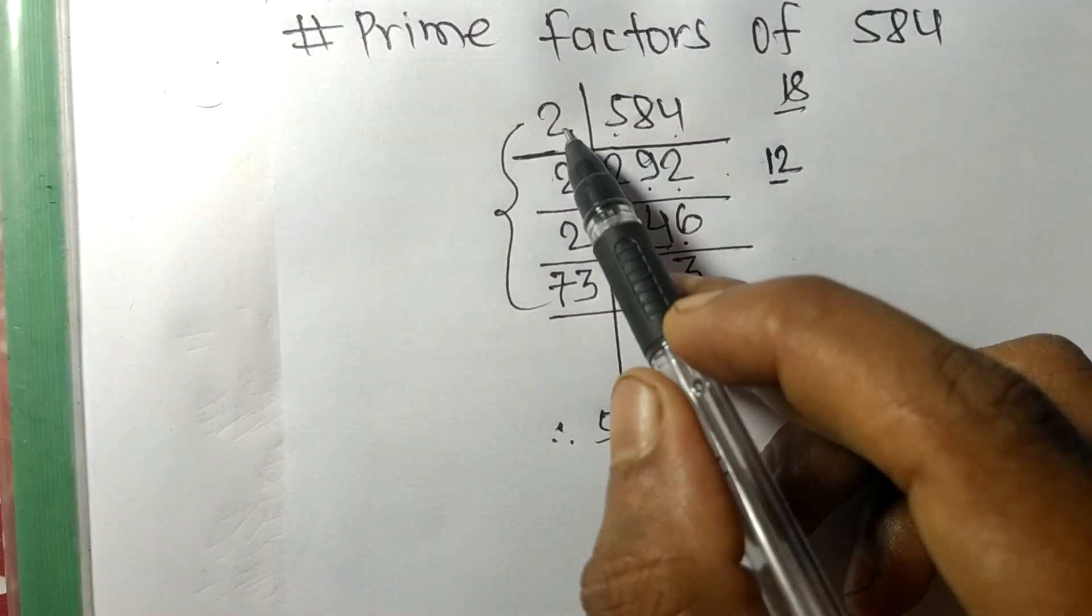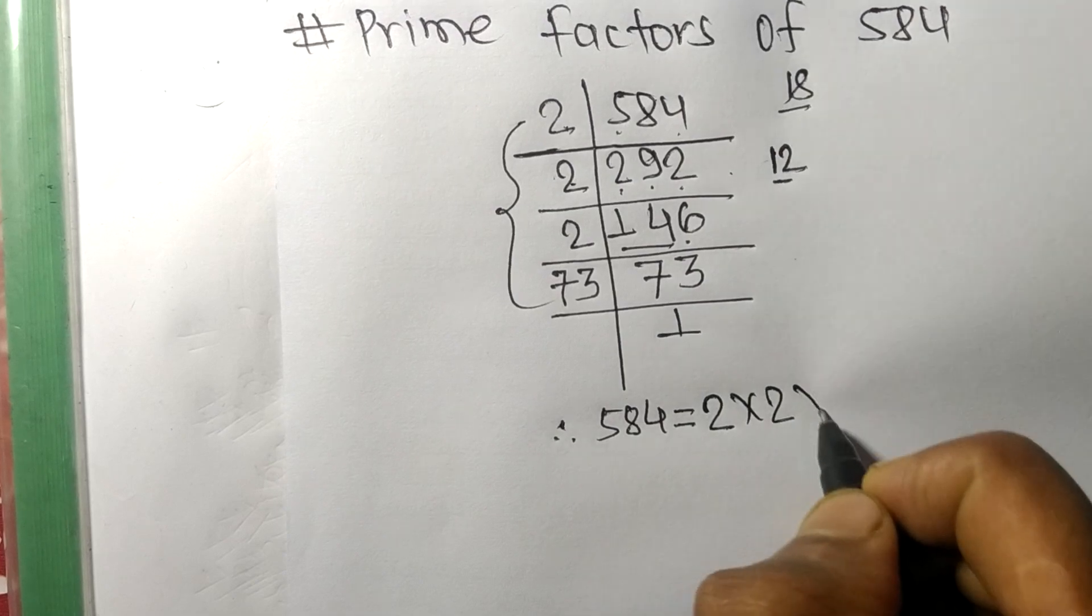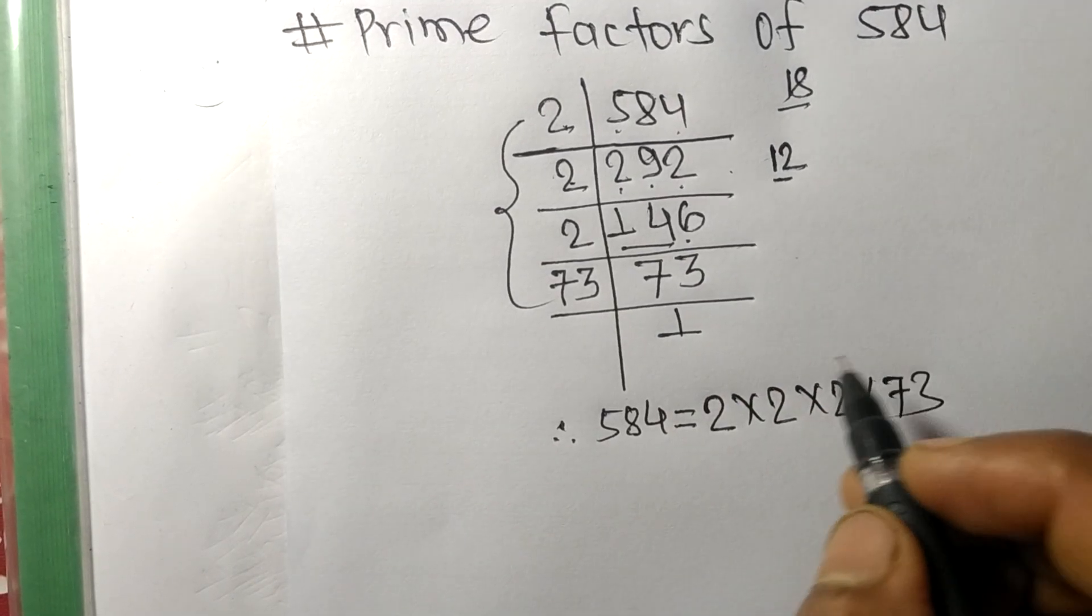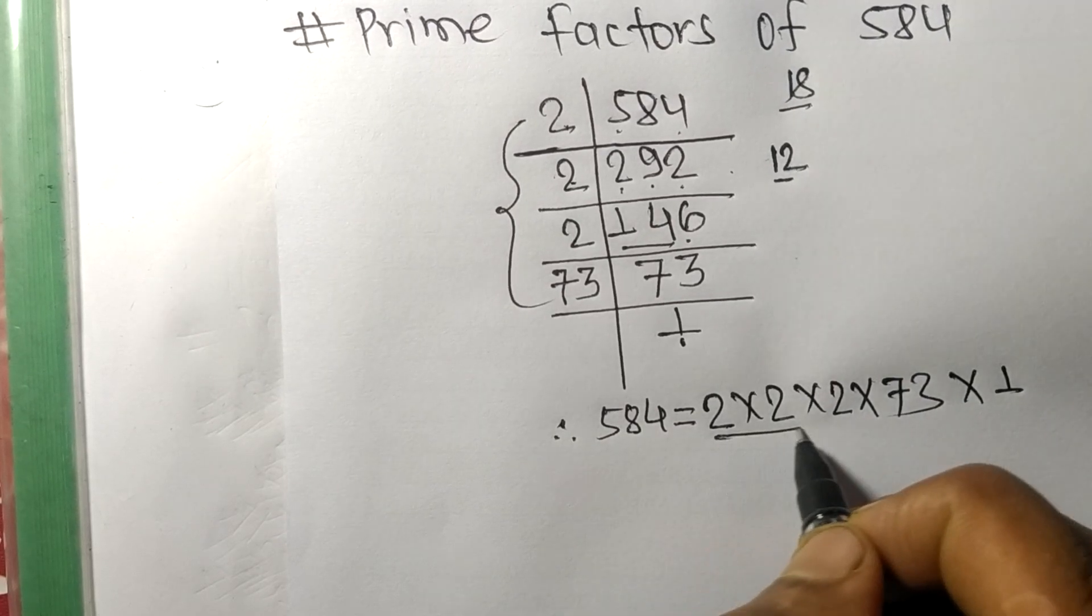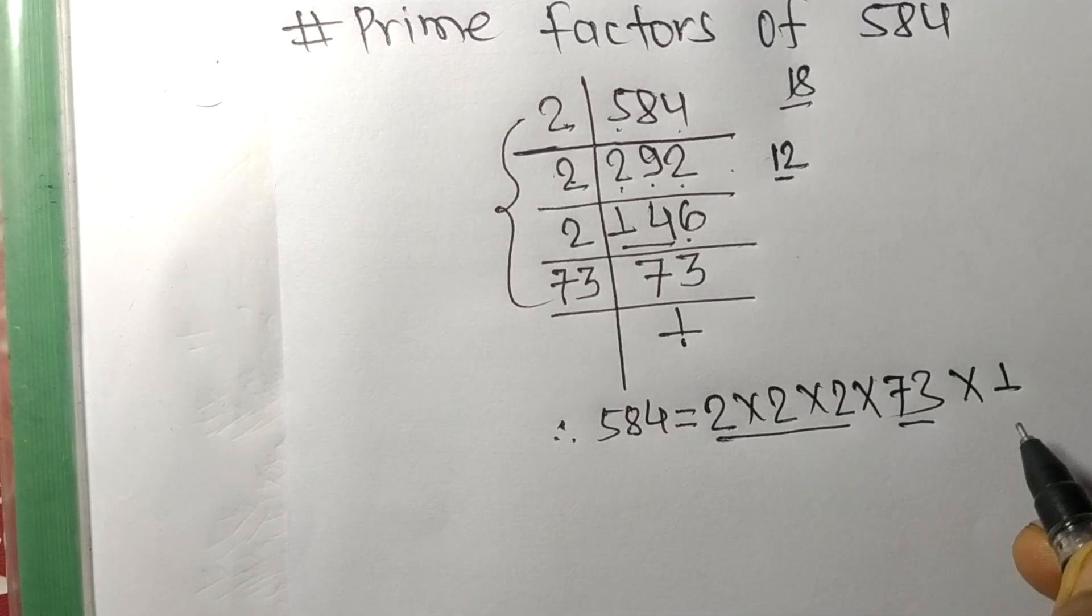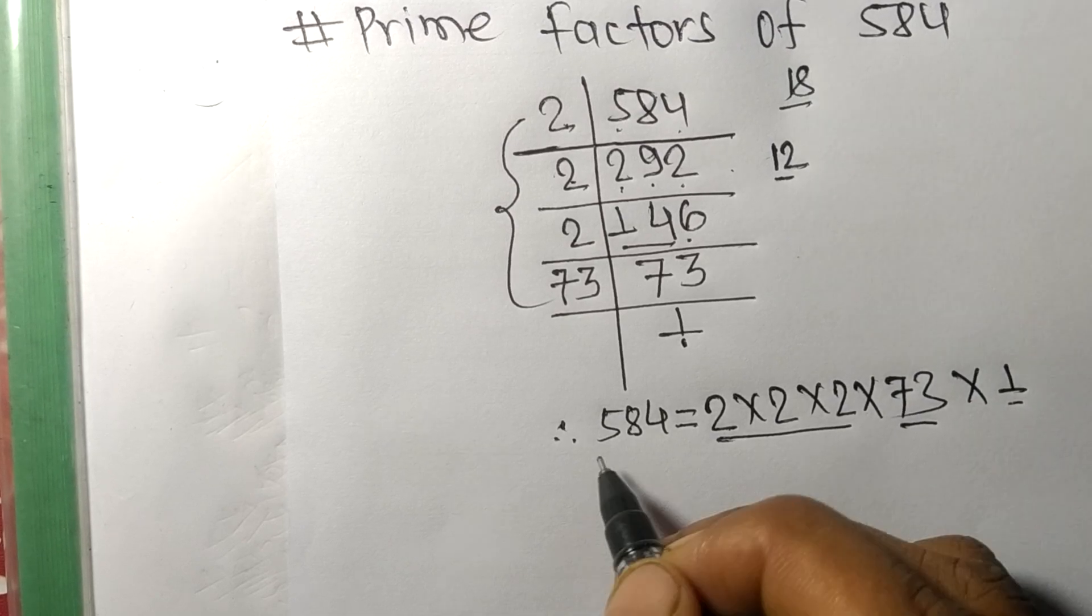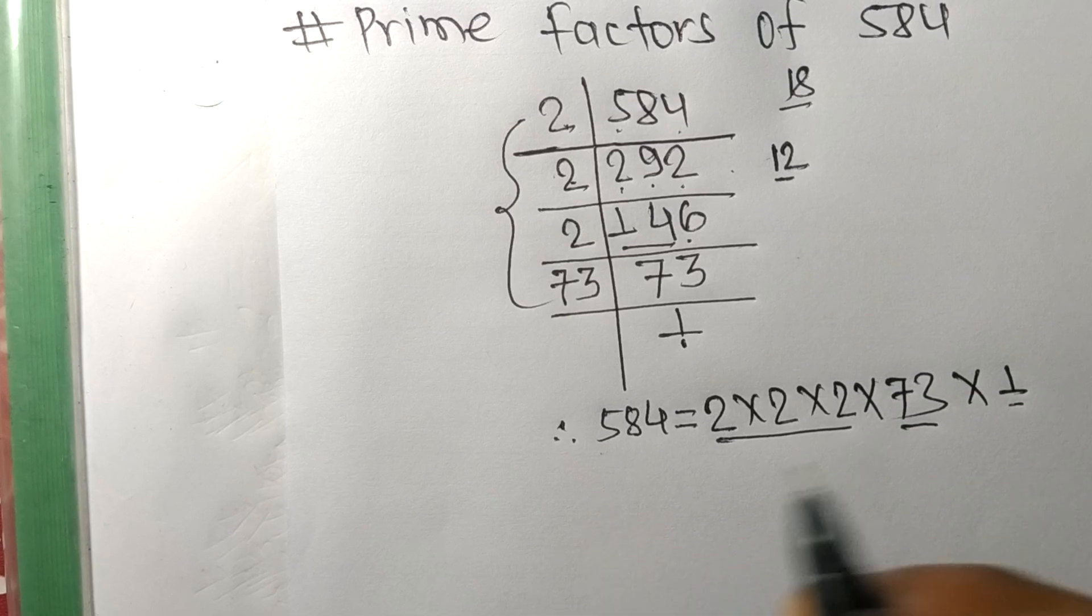So 1, 2, 3 times 2, and this 73, and from here we get 1. So these 2, 73 and 1 are the prime factors of 584. This is all for today. Thanks for watching.